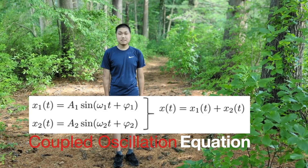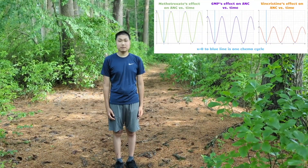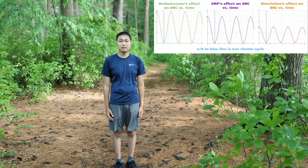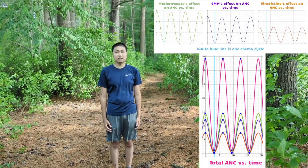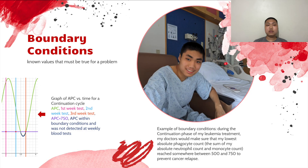Then, by using the concept of coupled oscillation, the different oscillating blood cell count functions can be added together to create a total blood cell count prediction function.